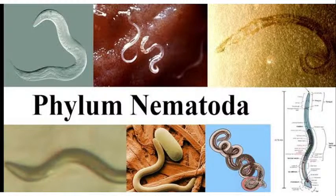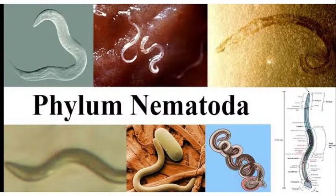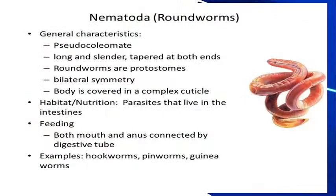Nematodes may be free-living or parasitic — you can see some examples of nematode parasites. They are endoparasites that can infect plants and animals. Their habitat is mostly aquatic, though some may be terrestrial. Round worms have organ system level of organization.